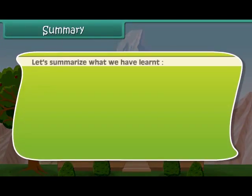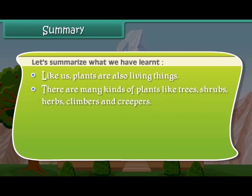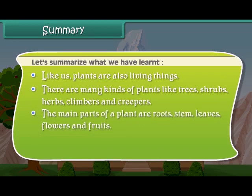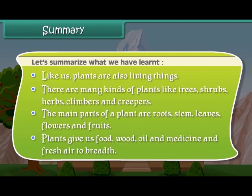Now friends, let us summarize what we have learned so far. Like us, plants are also living things. There are many kinds of plants like trees, shrubs, herbs, climbers and creepers. The main parts of a plant are roots, stem, leaves, flowers and fruits. Plants give us food, wood, oil, medicine and fresh air to breathe.